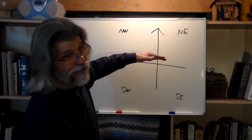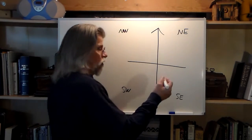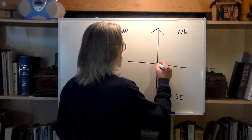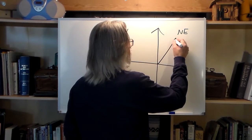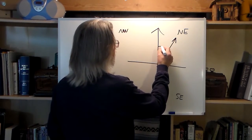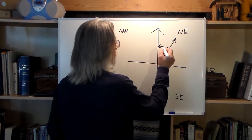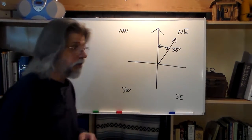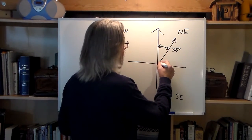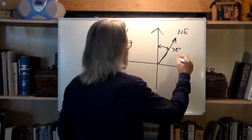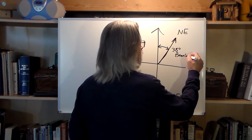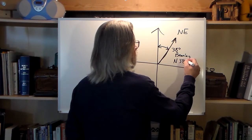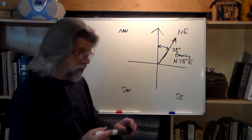Let's use an example in the northeast quadrant. Suppose we had a line that started in the middle and went up this way — and if this angle here was, say, 38 degrees — then this line would have a bearing of north 38 degrees east.